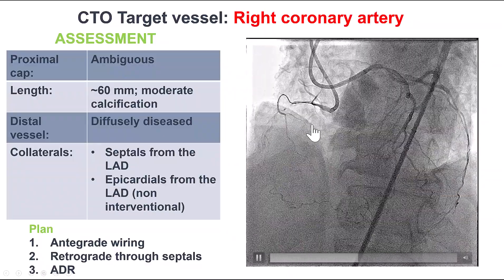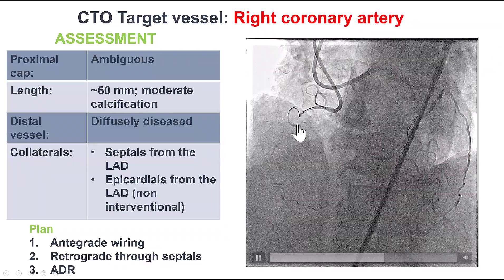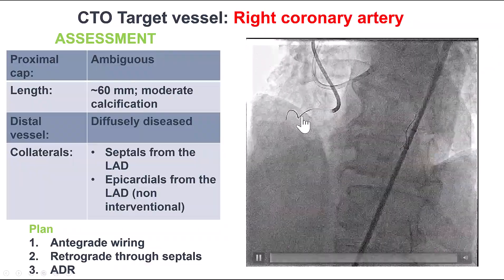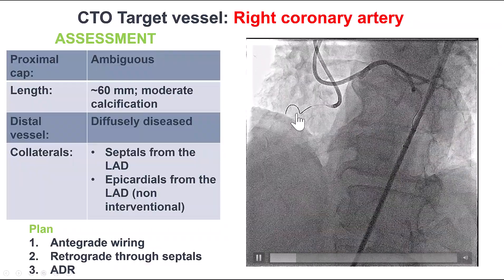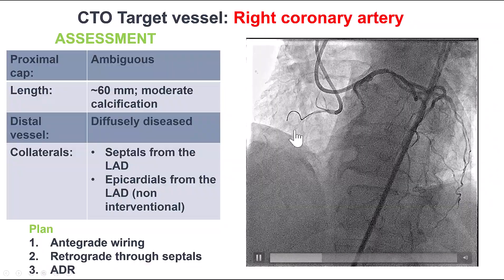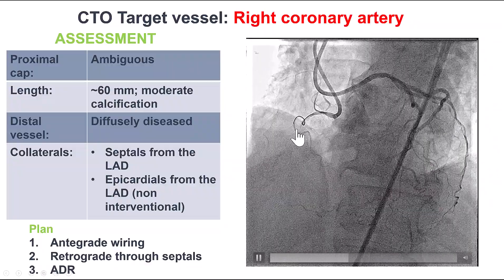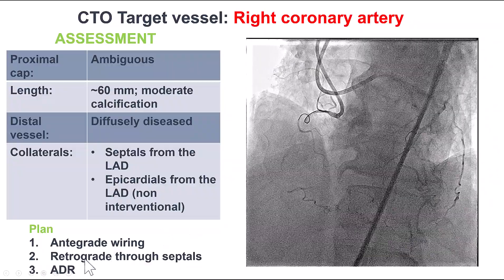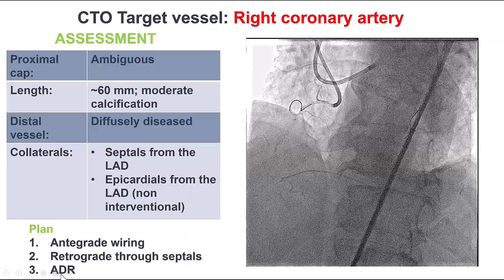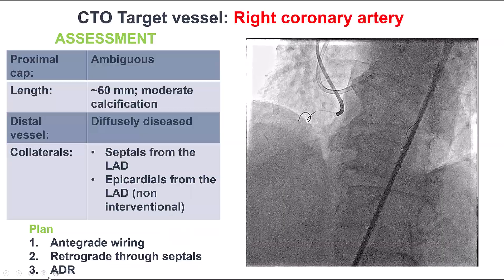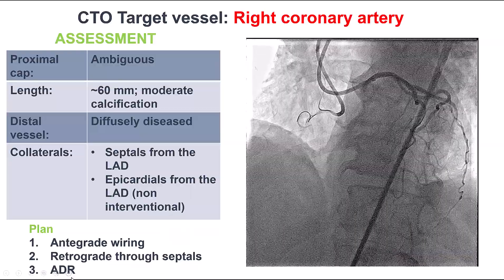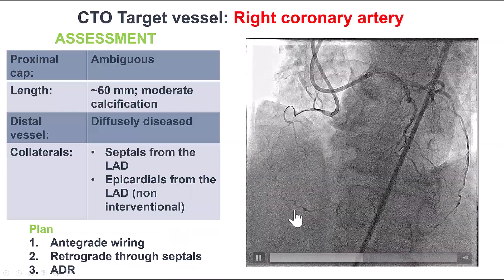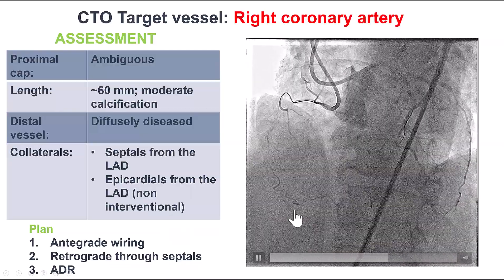Our initial plan was to try antegrade first, to see if we could clarify the proximal cap ambiguity by using various projections. If that didn't work, we would try retrograde through septals, and leave antegrade dissection re-entry as the last option because of the small size of the distal vessel.